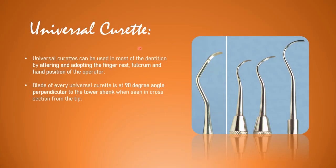The universal curette is the most commonly used and can be used in most of the dentition by altering and adapting the finger rest, fulcrum, and hand position of the operator. The blade of every curette is at a 90-degree angle perpendicular to the shank when seen in cross-section from the tip. Here you can see the various universal curettes used in the dentition.